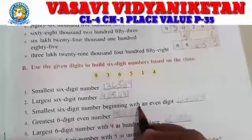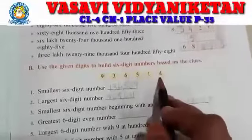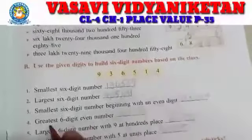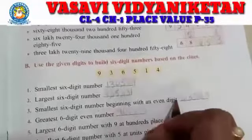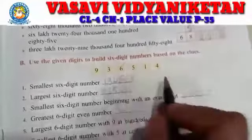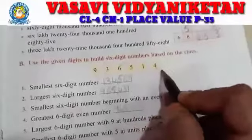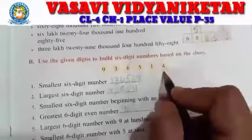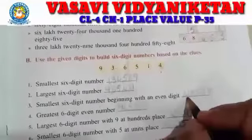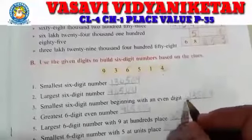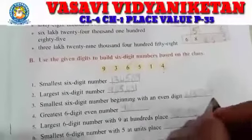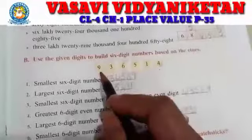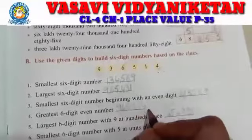Smallest 6-digit number beginning with an even digit. So the even digit here gives us the smallest digit beginning with an even number. The answer is 4, giving us a number beginning with 4. What about 9,65,314?